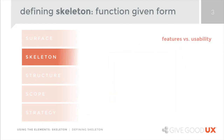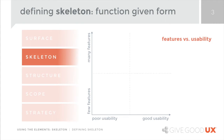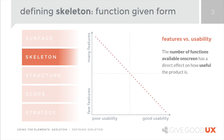The skeleton plane is also the place where we start to see the relationship between features and overall usability. And that relationship is pretty simple: the more features that anything has, the less likely that its usability is good. At any given point in time, the number of features or functions available on the screen has a direct effect on how useful that product is.